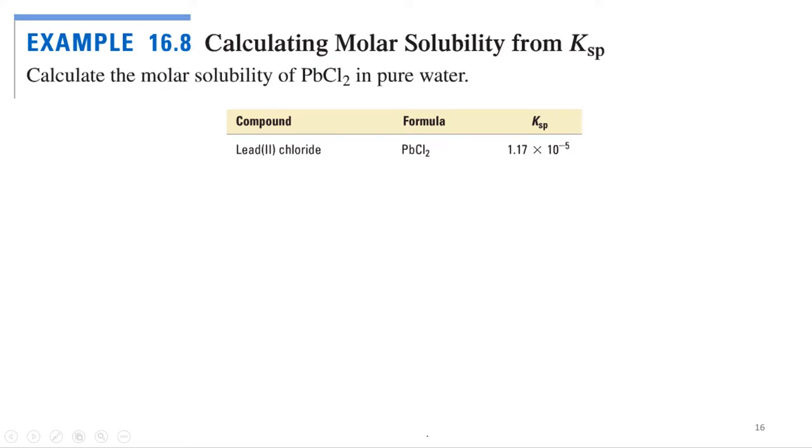Alright, so let's try one of these. Perhaps example 16.8. Let's calculate the molar solubility from the Ksp. So, calculate the molar solubility of PbCl2, lead two chloride, in pure water. Alright, so we got the compound, we got the Ksp, 1.17 times 10 to the negative 5th.